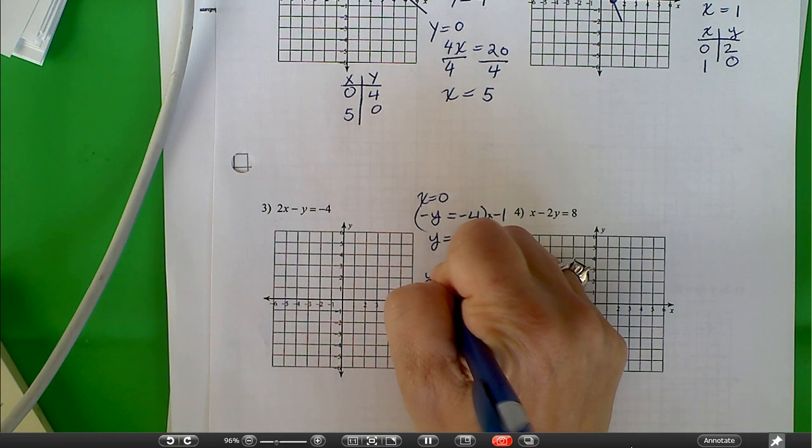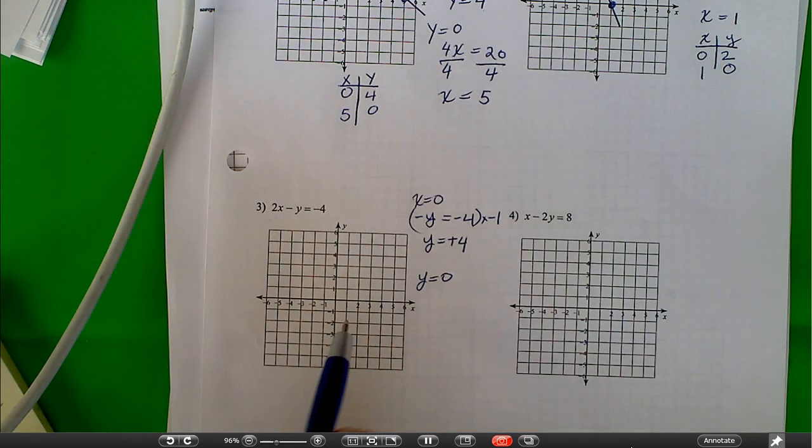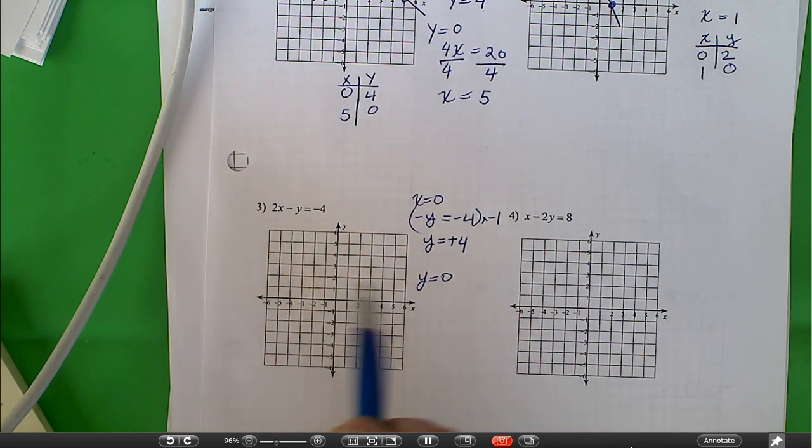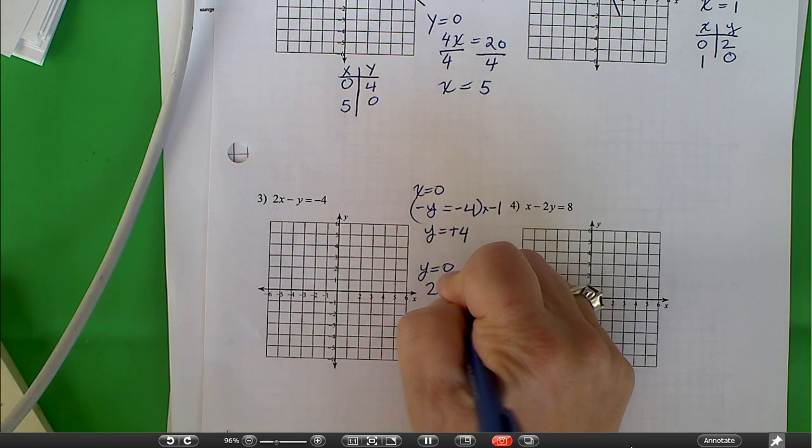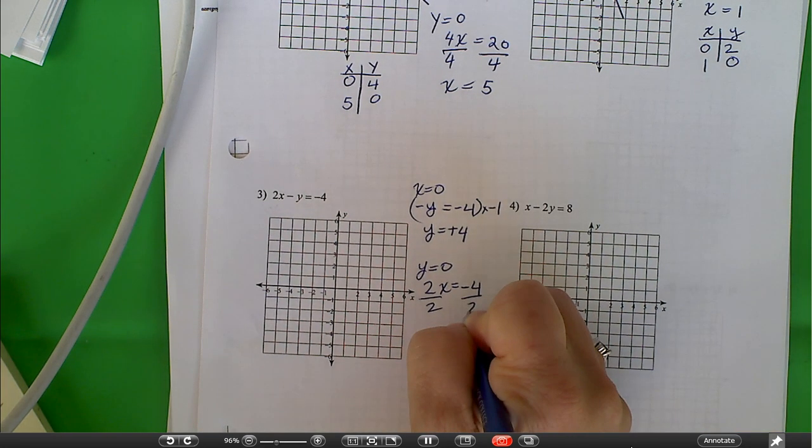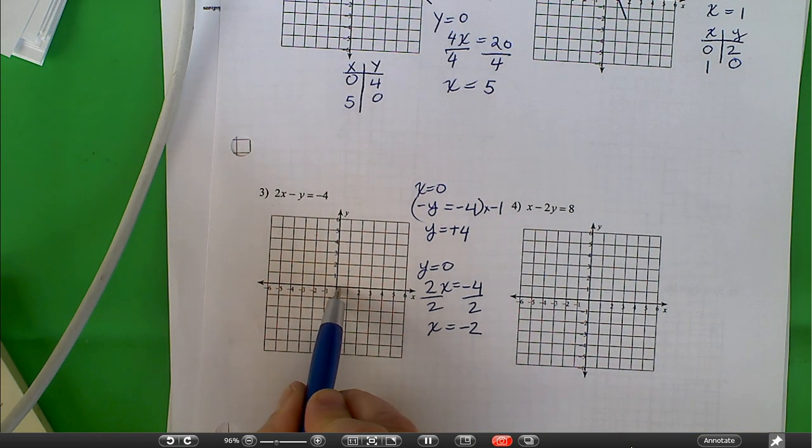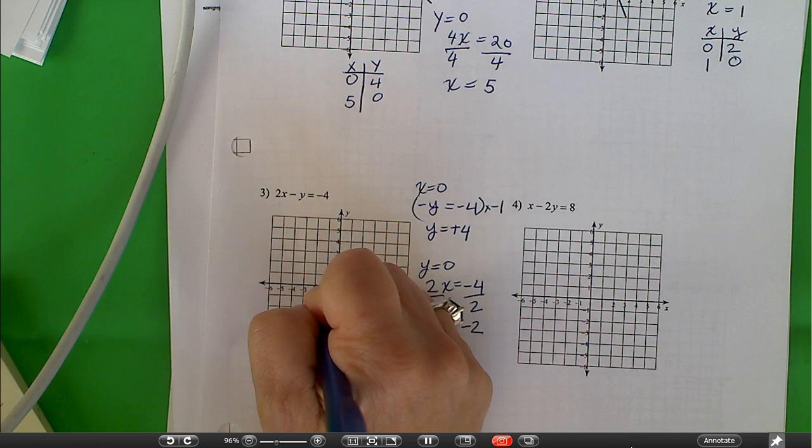What happens when y is equal to 0? When y is equal to 0, we end up with 2x is equal to negative 4. We're dividing both sides by 2, and I get x is equal to negative 2. So y is equal to 0, x is equal to negative 2.